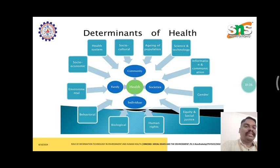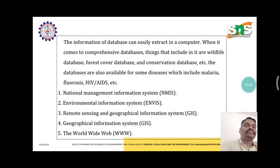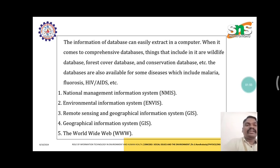Determinants of health — there are different types of determinants, as shown in this figure. The information of a database can easily be extracted in a computer. When it comes to a comprehensive database, things that are included are wildlife database, forest cover database, and conservation database, etc.